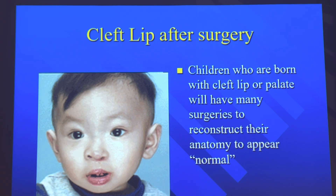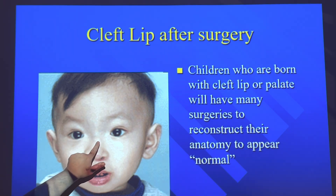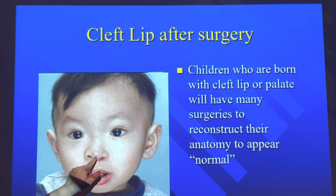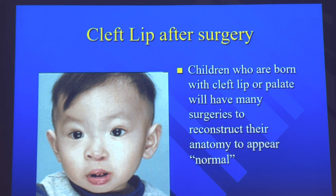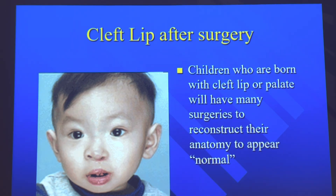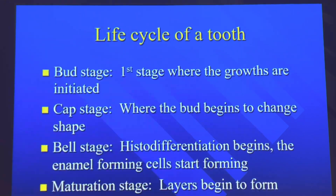Here you see a little boy that has cleft lip and also had cleft palate. You can see how the nostril is lower on his left side. This is how it affects an infant when they're born — they have trouble swallowing, drinking from a bottle, latching on. They have to go through many surgeries to correct this at different stages in their life.